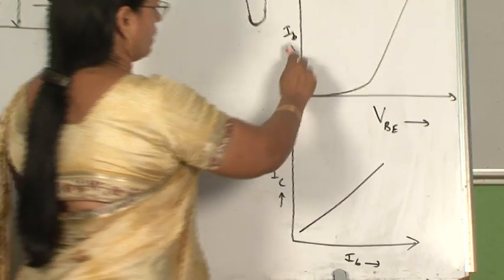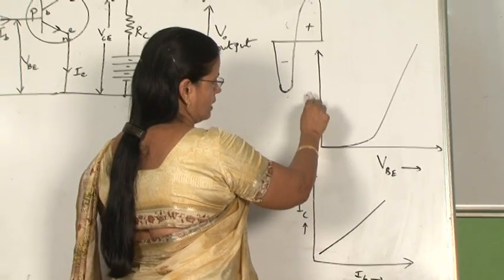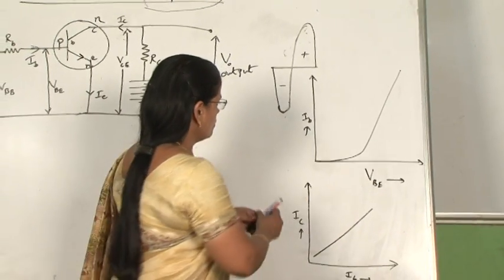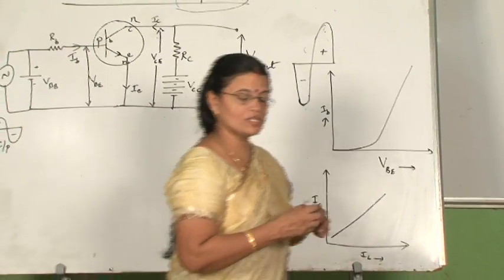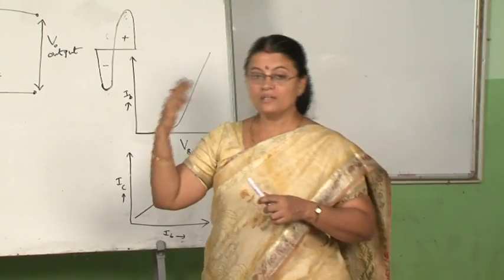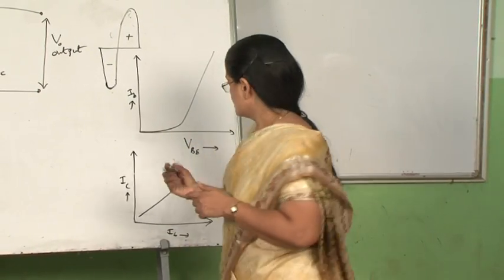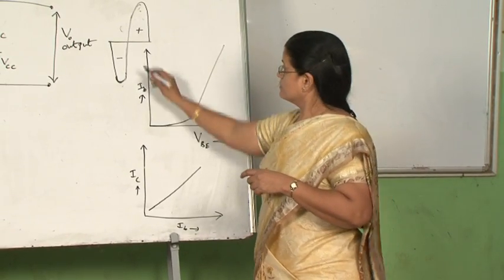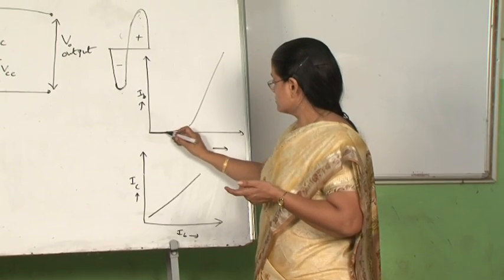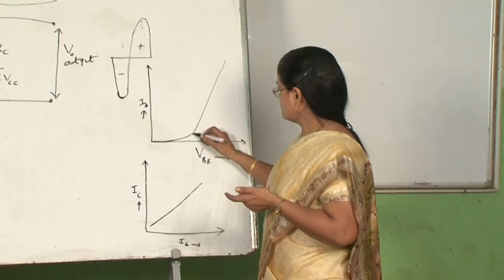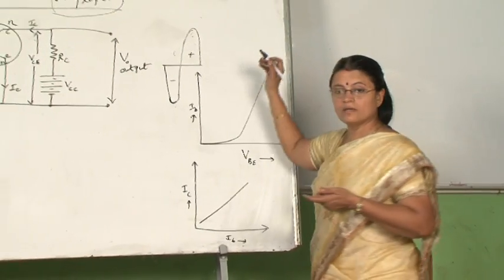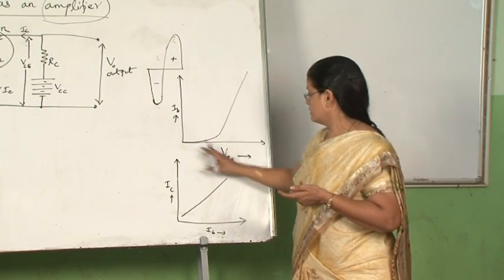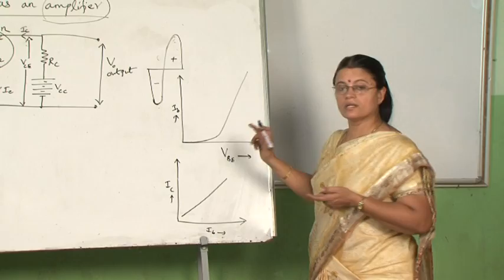This graph shows the variation of input current IB with respect to the input voltage VBE. If you recollect, it is similar to the PN junction diode forward bias characteristic. As long as the barrier potential is not overcome, the transistor is not going to function. That portion represents that region, and after the knee voltage, the current increases almost linearly. So this graph tells you the variation of input current based on the variation of input voltage.